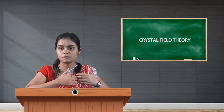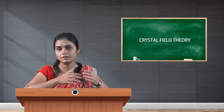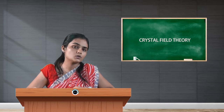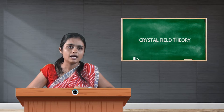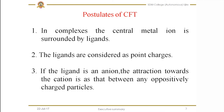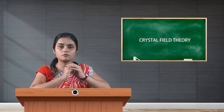The factors which VBT failed to explain will be explained by this particular theory. Now we shall discuss the postulates of CFT. The first postulate says that in complexes, the central metal ion is surrounded by ligands. The second postulate is that the ligands are considered as point charges. The third postulate says that if the ligand is an ion, the attraction towards the cation is that between any oppositely charged particles.